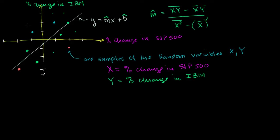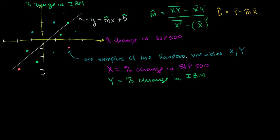And the Y-intercept estimate B̂ is equal to the mean of the Y's minus our estimate of the slope times the mean of the X's. We know that the point (mean of X, mean of Y) lies on this line, so you just solve for B. This is the best regression for our n data points, our n samples.